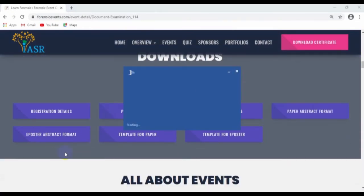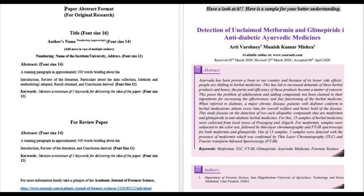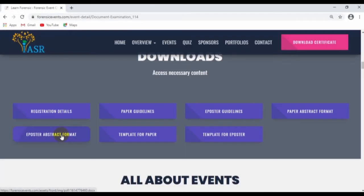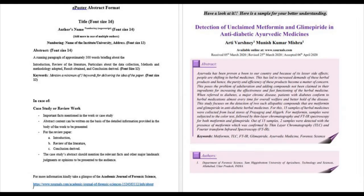Download the paper abstract format if you are going to present your paper. In the paper abstract format, you can see the various details you need to provide — a sample is included in the format itself. Similarly, for the e-poster, go to the e-poster abstract format, download the template, fill out the details to be presented, and submit it to the ISR Forensic Conference Gmail in the desired format.